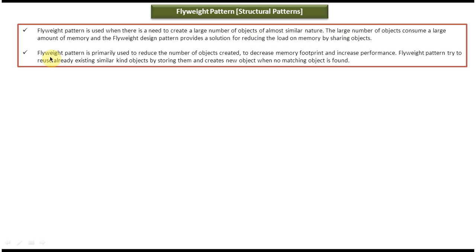And the second explanation: Flyweight pattern is primarily used to reduce the number of objects created, to decrease memory footprint and increase performance. Flyweight pattern tries to reuse already existing similar kind of objects by storing them, and creates a new object when no matching object is found.